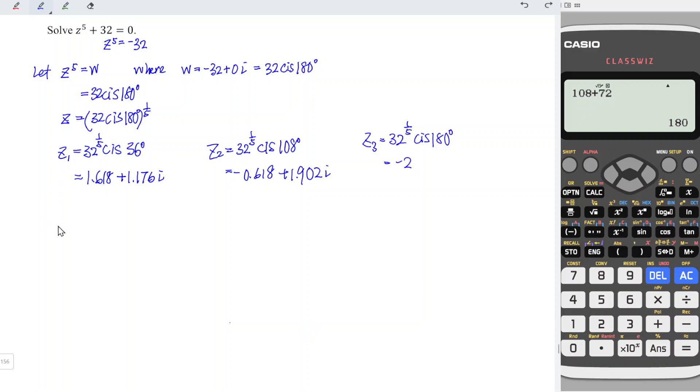And for the fourth root, z4, we have equal to, again, 32 to the power of 1 over 5 cis. Now we should take 180 degrees plus 72. Every time we increase by 72 degrees, which is 252 degrees. And now we should have, again, refer back to the previous entered value. So we change 108 to 252. Press equal, we obtain negative 0.618. And we should now change cos to sine. So which means that we have is equal to negative 1.902i.